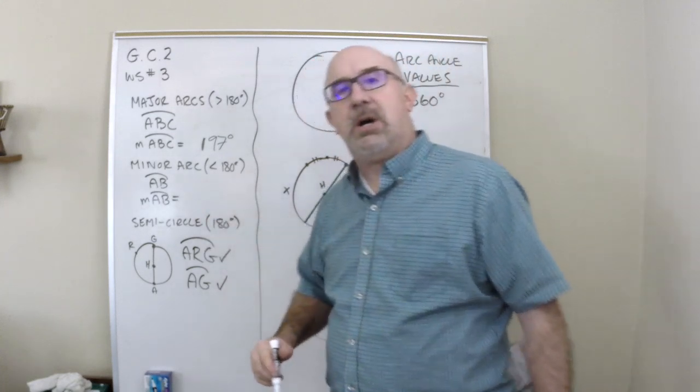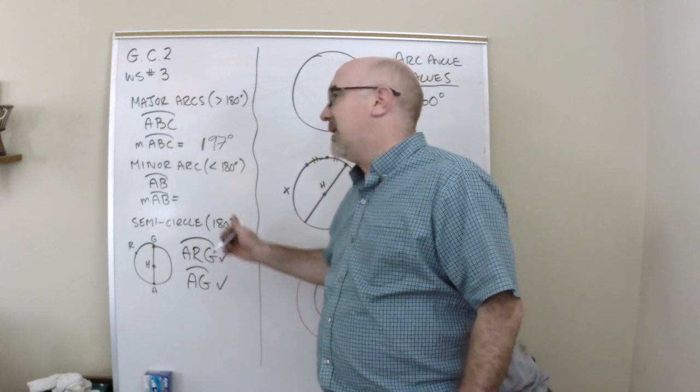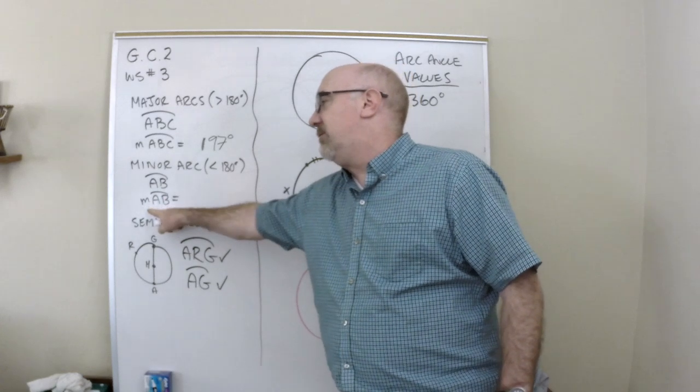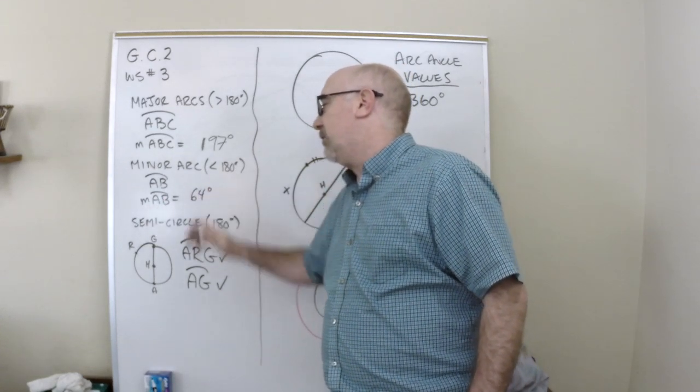A minor arc is smaller than 180 degrees, and because of that is denoted by just two letters, and again, denoted as to the measurement of that. So maybe this guy is just 64 degrees.